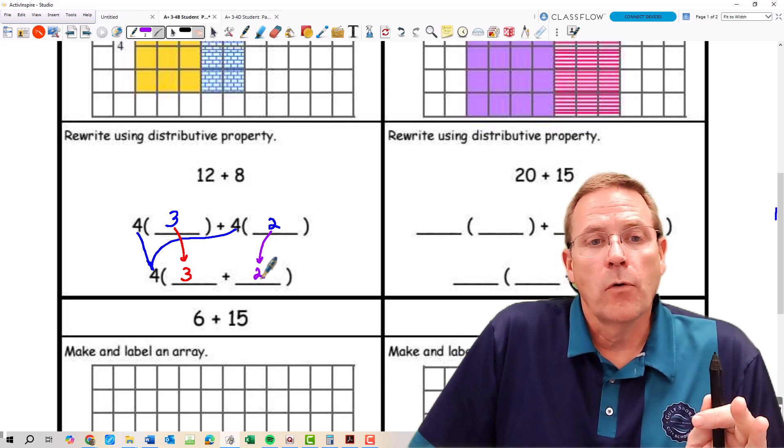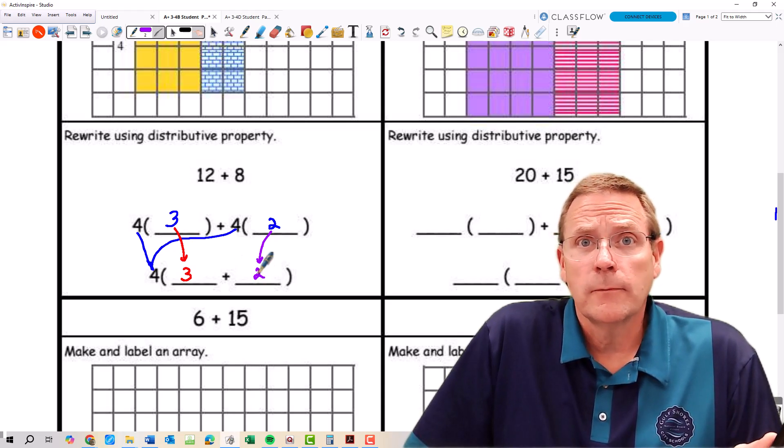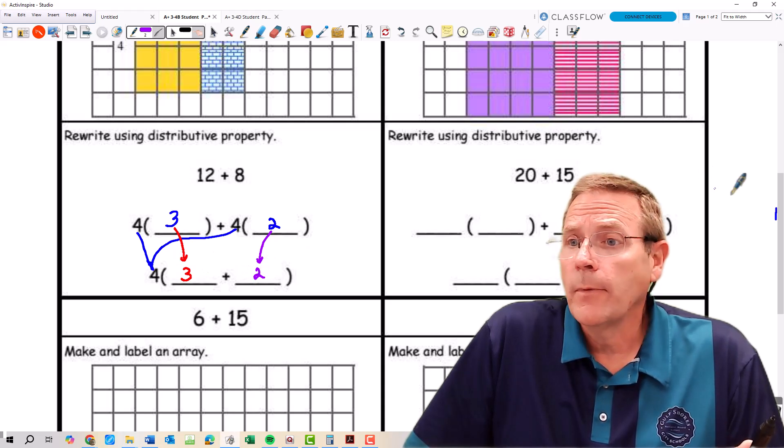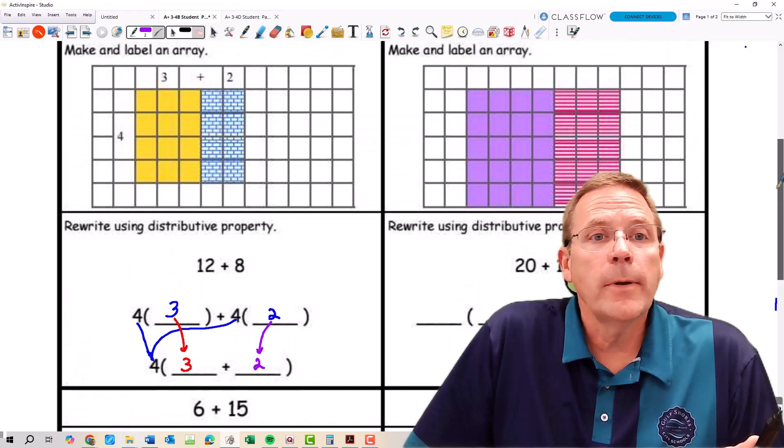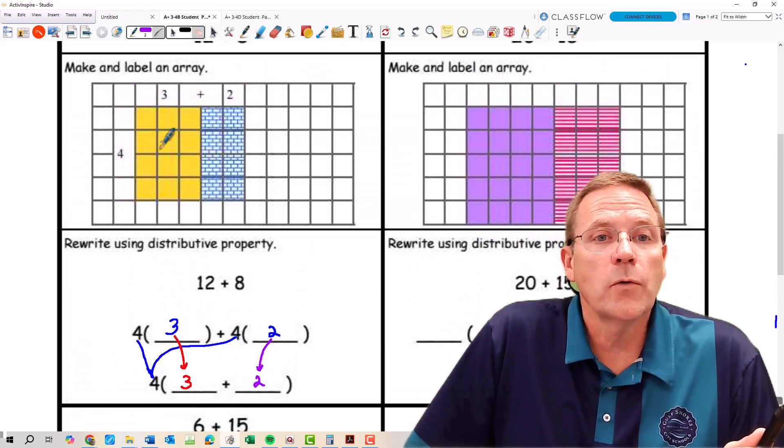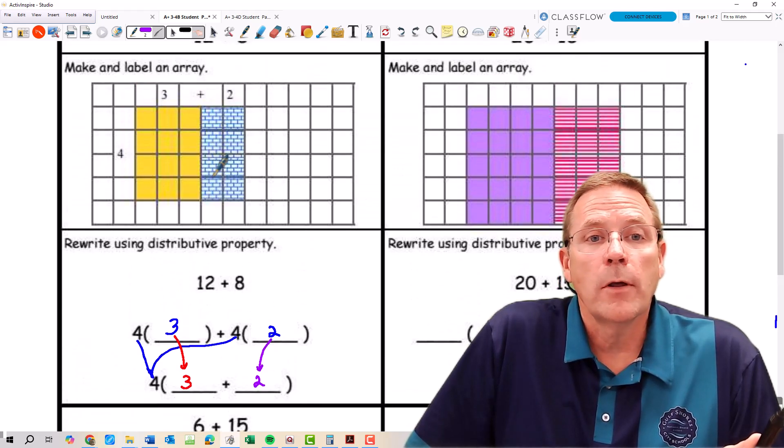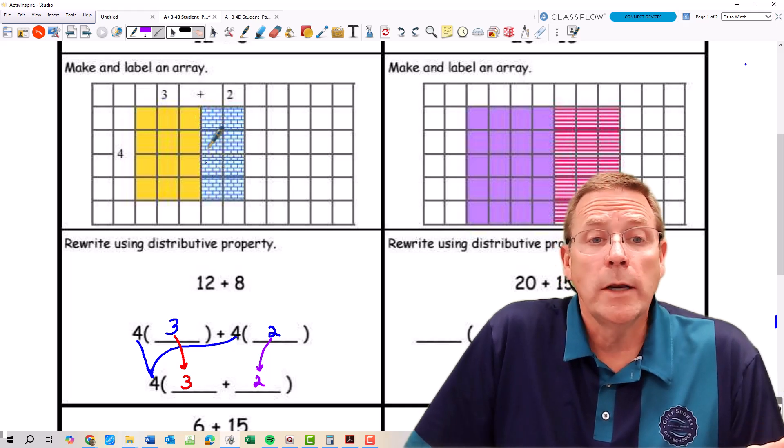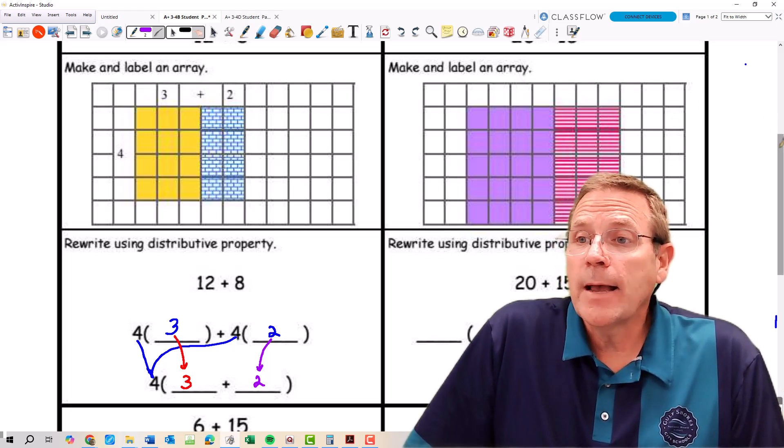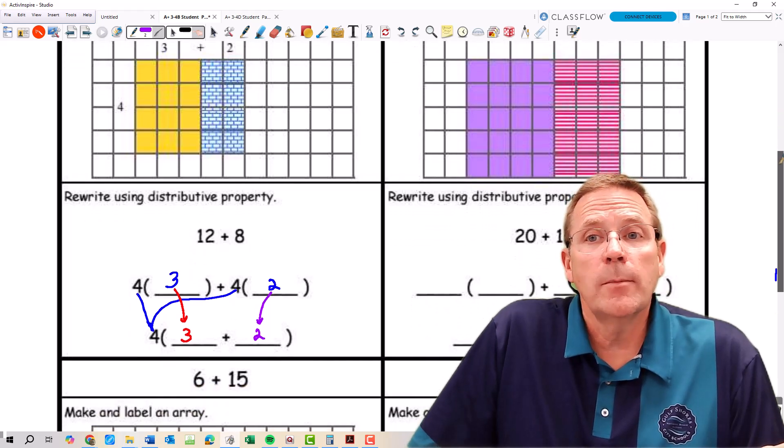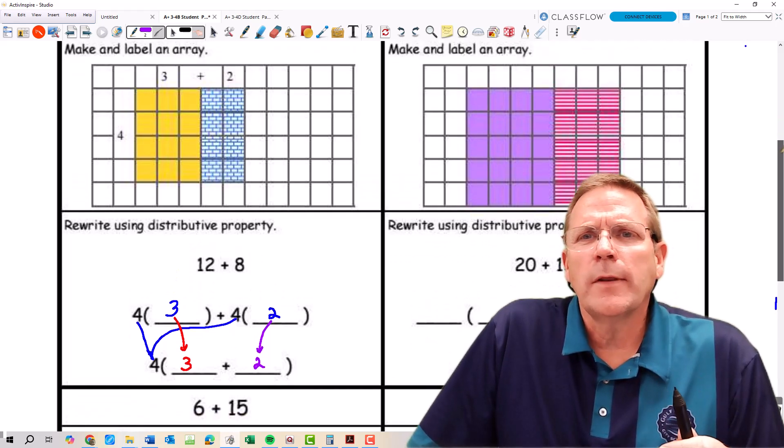So, from there, now we're going to take and finish up using our distributive property here or rewriting using the distributive property where these two 4s are going to come together to be that 1 4. And then this 3 is going to come down right there. And this 2 is going to come down right there. So, the way we would write that answer in the end, we change that 12 plus 8 into 4 times the sum of 3 and 2. Of course, the sum of 3 and 2 is going to be what? 5. And 4 times 5 is going to be what? 20. If we were to take and go back up here and count up all of these squares, I'd have 12 plus 8, which is 20 colored squares total. So, that is an example on how you would use the distributive property here.